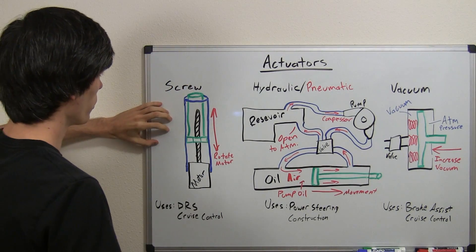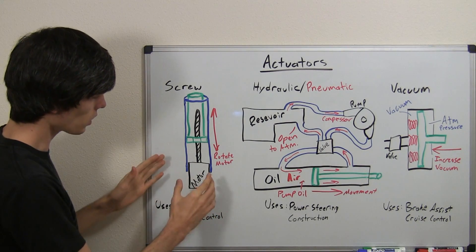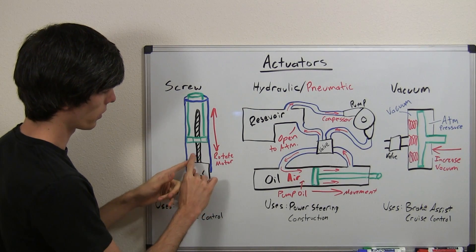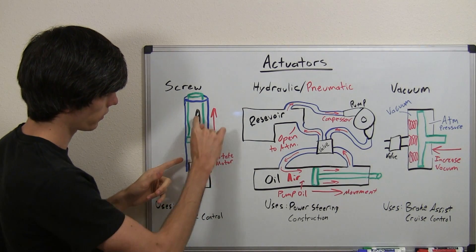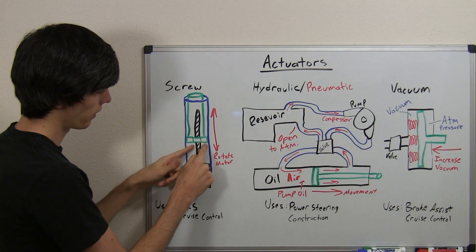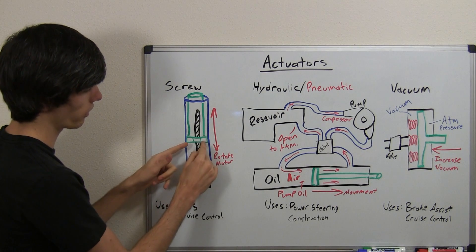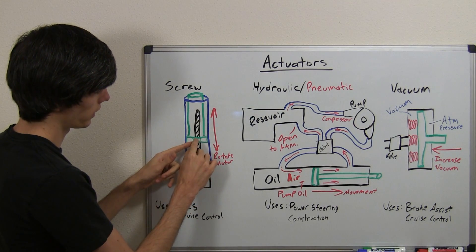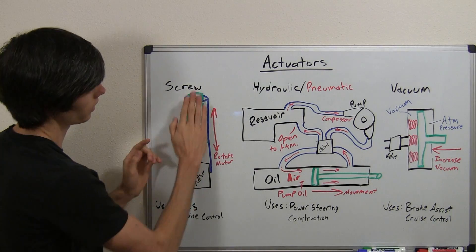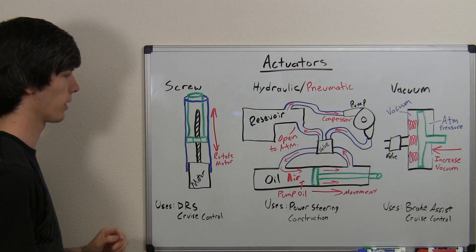Starting with the screw-type actuator, one of the most basic types of the linear actuator. What you've got going on is you've got an electric motor and that motor turns a threaded rod. Attached to this threaded rod we've got this little green device here — this is a nut — and it's threaded on the inside. As this motor turns, it moves one way; it could move vertically or move down depending on which way the motor is rotating.